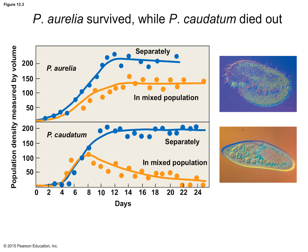Gause then performed similar experiments using P. caudatum and a different paramecium species, P. bursaria. These species actually coexisted in mixed culture — they both reached their carrying capacity because of differences in feeding behavior. It turns out P. caudatum fed on bacteria suspended in the solution, and P. bursaria fed on bacteria at the bottom of the tube. They were feeding on different aspects of their resource base and therefore did not compete directly, so they both persisted and one did not out-compete the other.